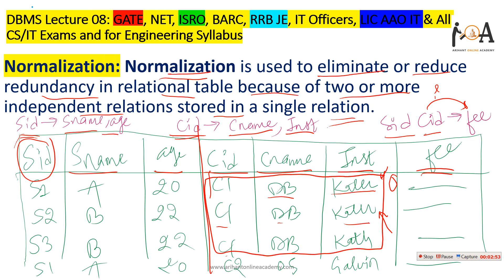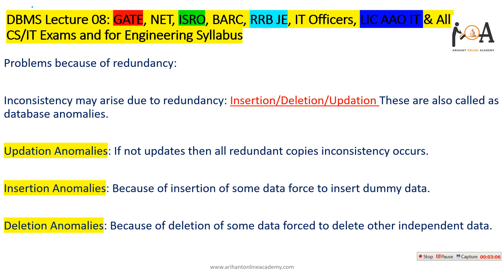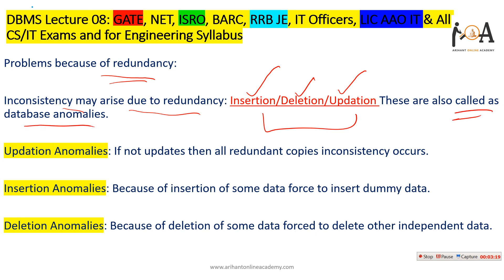Normalization creates ease of space and organizes the database functionally. The problem with redundancy is that inconsistency may arise due to insertion, deletion, or updation — and these three are also called database anomalies. In NET exams or ISRO exams, a direct question is often asked: what are the database anomalies? The answer is insertion anomaly, deletion anomaly, and updation anomaly.